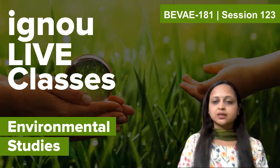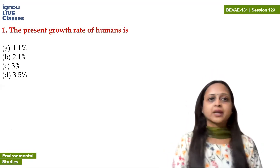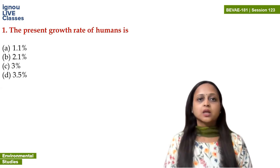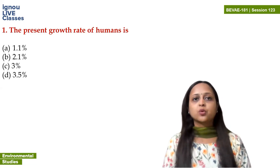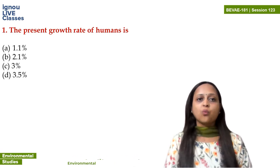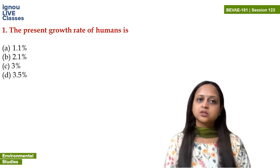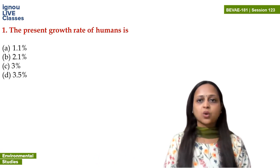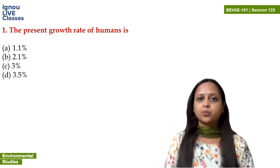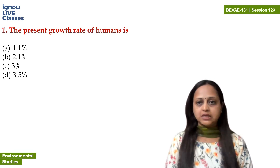Let's start with the first question of the session: what is the present growth rate of humans? Basically, you can say the population growth rate annually. The options are 1.1%, 2.1%, 3%, or 3.5%. The human population growth rate is 75 million.